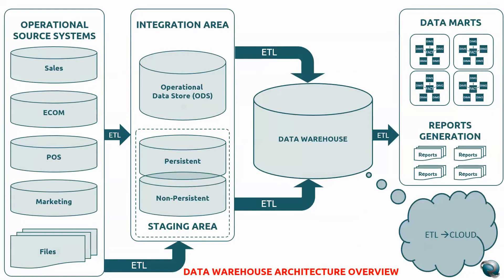From a data modeling perspective, tables are designed to store only summary records — for example, weekly transactions for a specific department or revenue at a summary level. When executives or higher officials want to generate a report, they get the data instantaneously. You can also generate reports directly using tools like Cognos, OLAP cubes, or other reporting tools — completely enterprise-specific based on their licensing and cost. This is the framework and architecture.